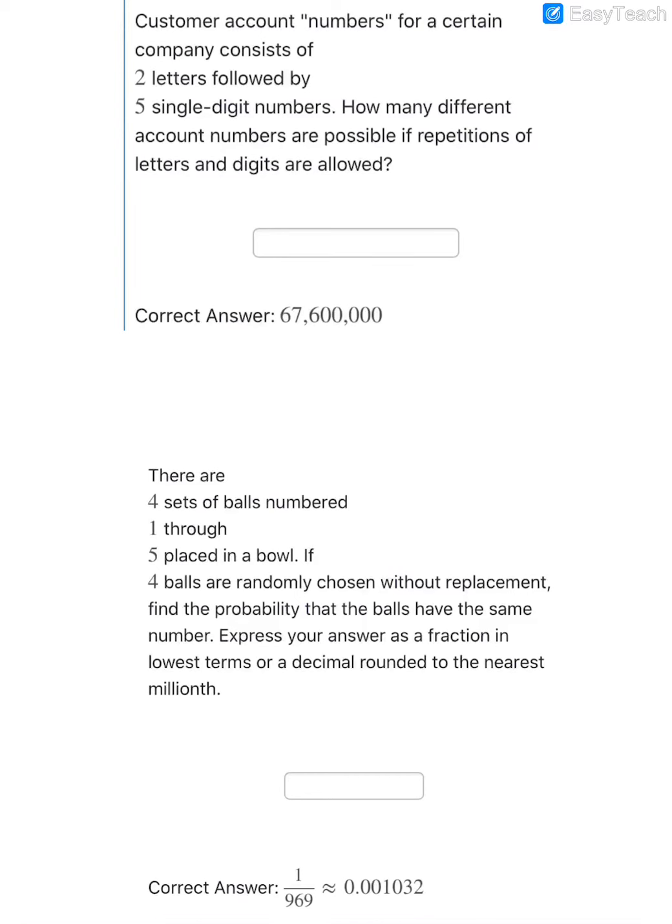We are going to look at some more counting and probability problems. In this first problem, they are telling me that customer account numbers for a certain company consist of two letters followed by five single-digit numbers.